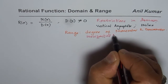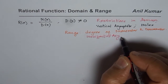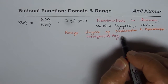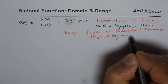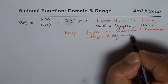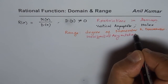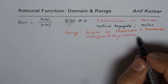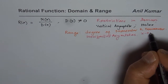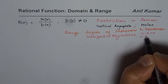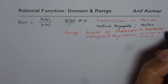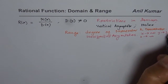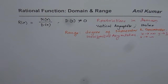The horizontal asymptote is the value of y which a function approaches but never reaches. When x approaches positive or negative infinity, y approaches a value L, and that value L is the restriction on the range.